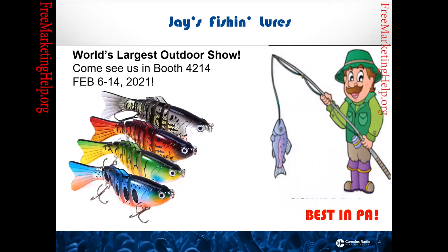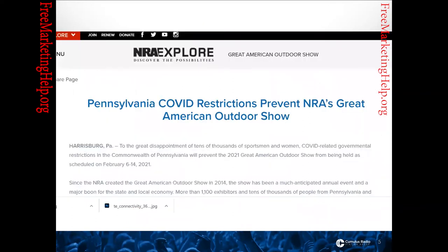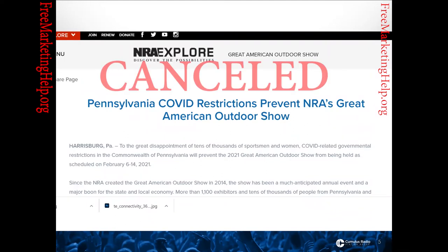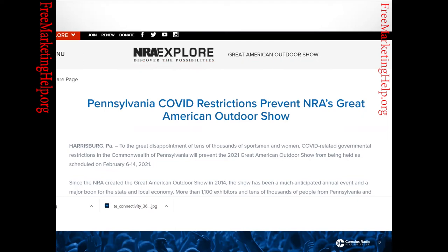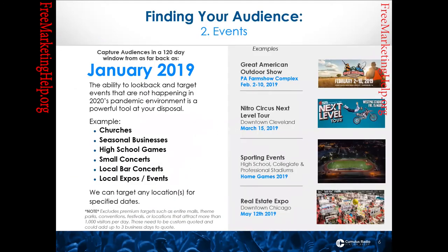Let's say for example, Jay's Fish and Lures — usually at this time of year is at the Pennsylvania Farm Show for the Great American Outdoor Show, the world's largest outdoor show. Jay does the majority of his business for the entire season at that one event during that two-week period. But when Jay found out that the Great American Outdoor Show was canceled this year due to COVID, as were many events, he's worried about how he's going to make up that income. So we're going to talk about how you can use local lookback and historical geofencing data to find your audience.